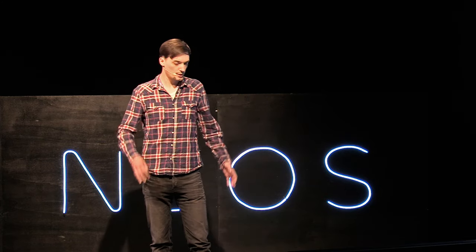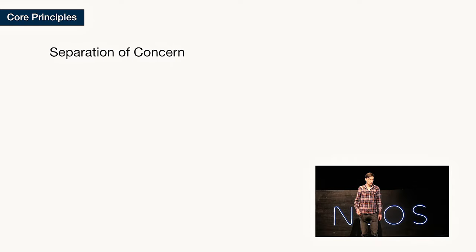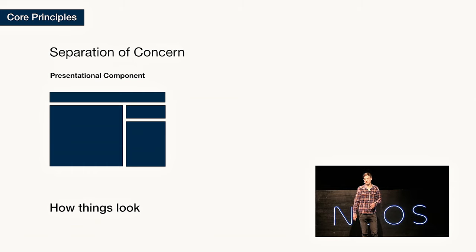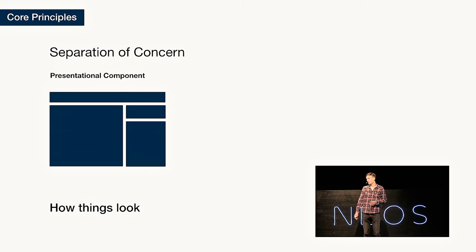The first one is the separation of concern. We want all our components to have one single concern, and we distinguish two types of components. First of all, the presentational components. They are just concerned with how things look. They know the layout, they know the CSS classes, they know maybe the HTML. But that's all they know. They don't know anything of concrete data. They just open up an API where you can put some data in, and they will render the content somewhere.